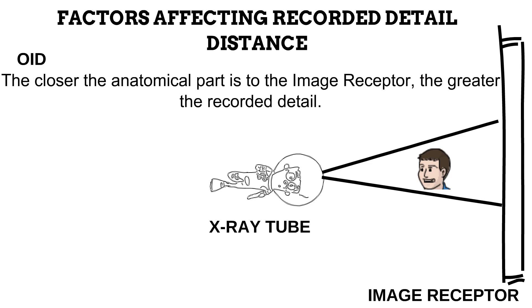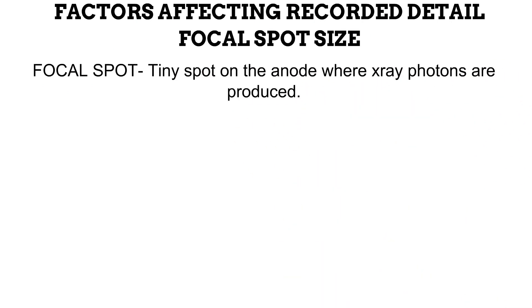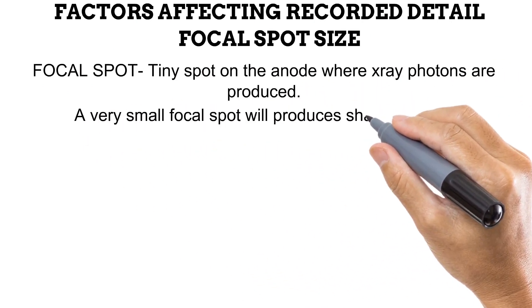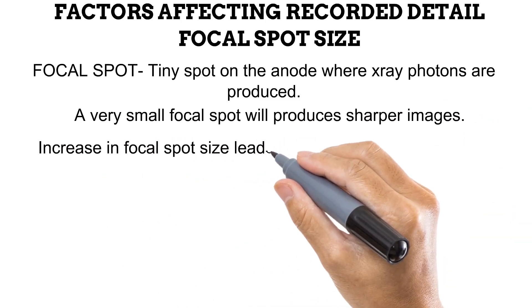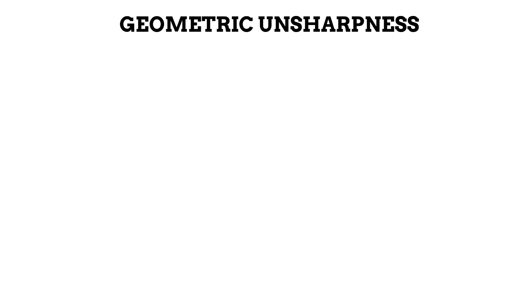This is why projections like the lateral cervical spine X-ray, which introduce distance between the neck and the image receptor, are performed with an increased SID — this compensates and prevents geometric unsharpness. The next factor affecting recorded detail is focal spot size. The focal spot is a tiny spot on the anode where X-ray photons are produced. The smaller this spot, the greater the recorded detail. As focal spot size increases, a penumbra effect occurs — a shadow-like area of unsharpness around the edges of the image — which is also a form of geometric unsharpness. Increased focal spot size, increased OID, and decreased SID all diminish recorded detail by introducing geometric unsharpness.